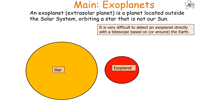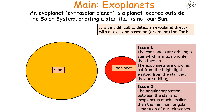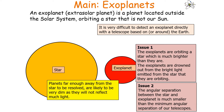Why do we not just find all exoplanets directly? It's actually very difficult to detect an exoplanet directly with a telescope based on or around the Earth. The first issue is that exoplanets are orbiting a star which is much brighter than they are, so the exoplanets are drowned out by the bright light emitted from the star. The second issue is that the angular separation between the star and the exoplanet is much smaller than the minimum angular separation of our telescopes, so planets far enough away to be resolved are likely to be very dim.